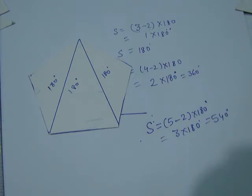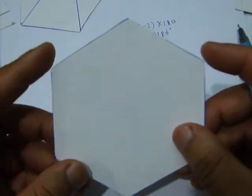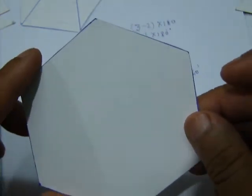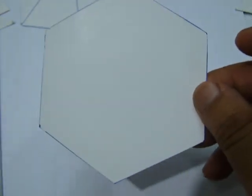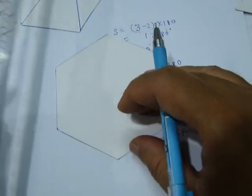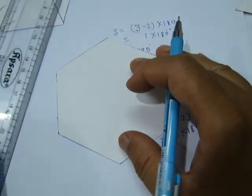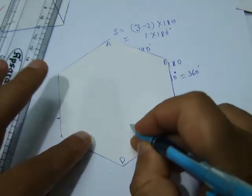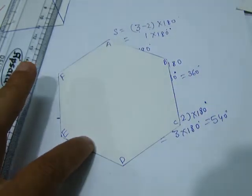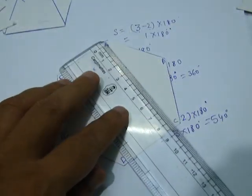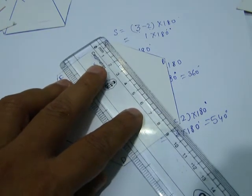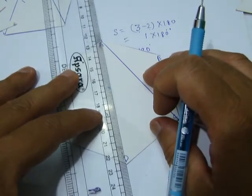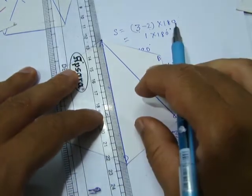After the pentagon, we have the hexagon. A hexagon has six sides. Let us count: 1, 2, 3, 4, 5, and 6. We will follow the same process and find the sum of the interior angles of the hexagon by joining diagonals. We can name the vertices A, B, C, D, E, F. Suppose I join diagonal AC, then AD, and also AE.